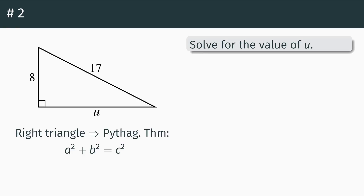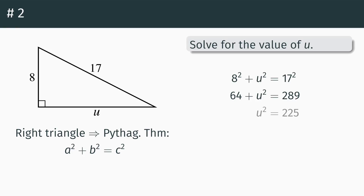The Pythagorean theorem says that if you've got a right triangle, you can say a squared plus b squared equals c squared, where c is that hypotenuse, that longest side. So the longest side of the triangle we've got here is the seventeen, because it's opposite that ninety-degree angle. So we can set up as eight squared plus u squared equals seventeen squared — eight and u are the two legs, so they're together on one side, where the seventeen is alone on the other side. Eight squared is sixty-four, seventeen squared gets 289, so u squared equals 225. We take the square root of both sides — root 225 is exactly 15 squared, so u equals 15. And there's our answer.